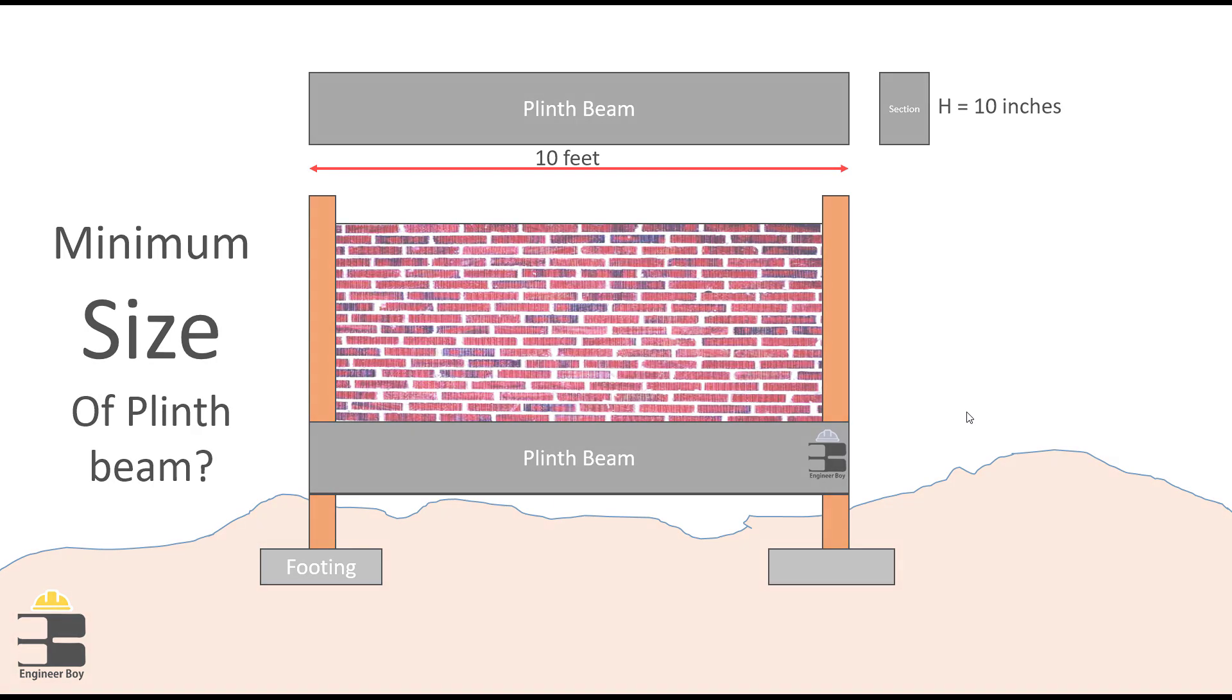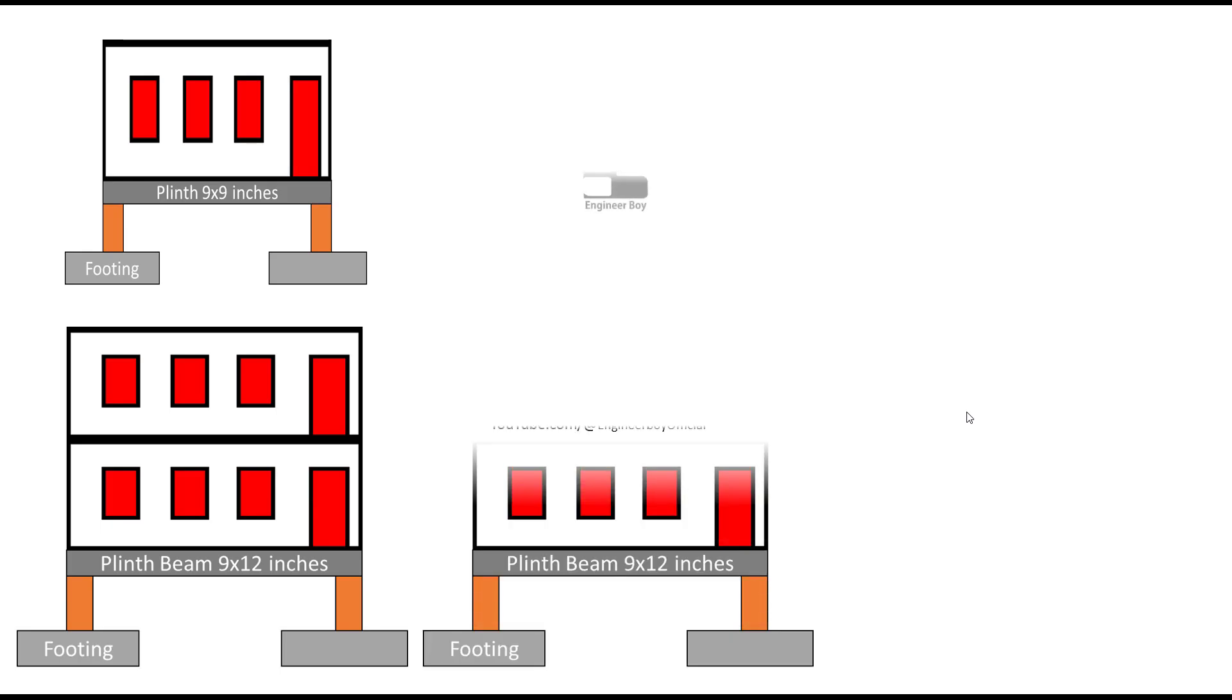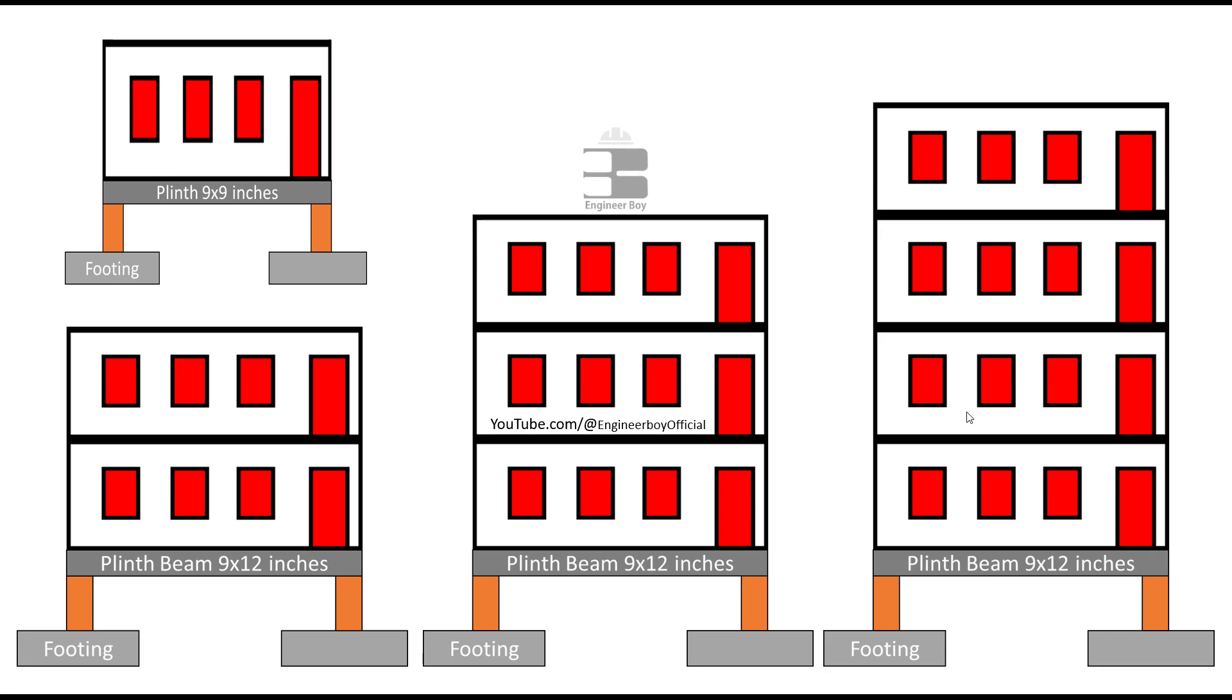Here in Pakistan, based on past experience, the plinth beam size for a one-story building is 9 by 9 inches, and 9 by 12 inches are used for 2-story, 3-story, and 4-story houses.